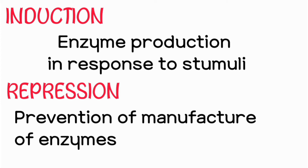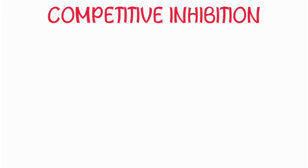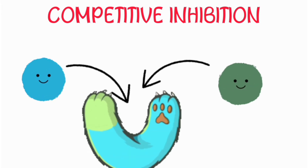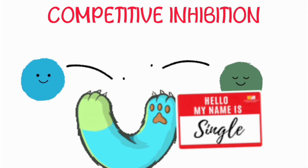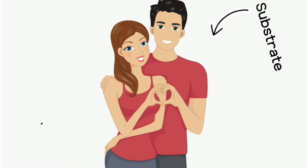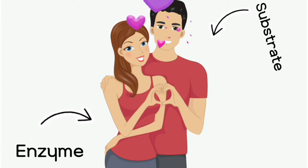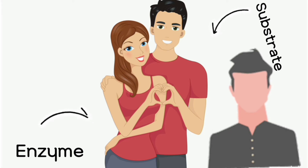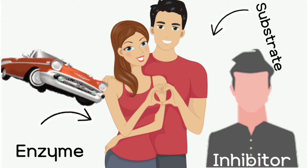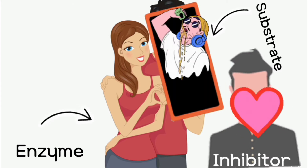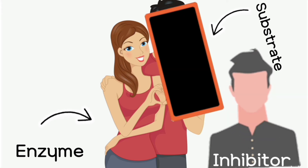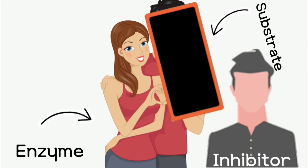There are a bunch of ways that enzymes can be regulated. First is competitive inhibition — just like it sounds, it happens when two different molecules are trying to bind to the same enzyme at the same place, which is called the active site. Using a relationship analogy: a guy is pursuing a girl, things are going well, and then suddenly another guy appears who looks almost exactly like him — same car and everything — and the girl starts to prefer the newcomer, leaving the first guy behind.